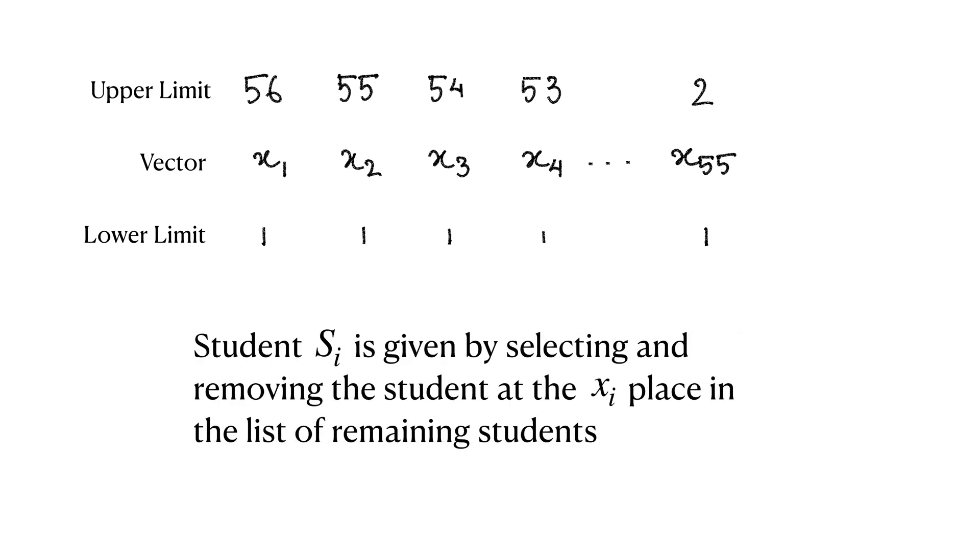The ith student in the sequence of students can be found by selecting and removing the xith student from a shrinking list of initially 56 students.